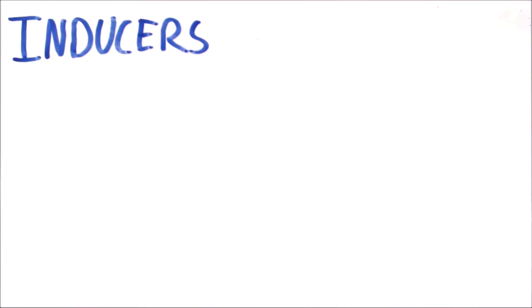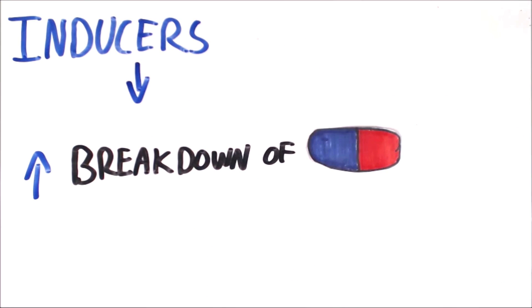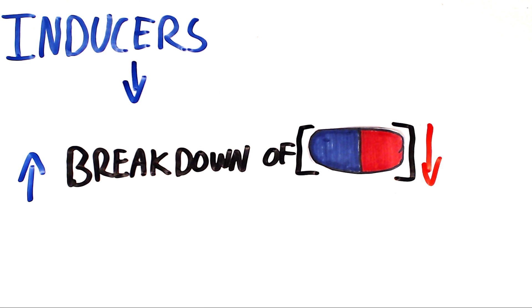Now a drug inducer increases the breakdown of the target drug, decreasing its concentration in the blood and therefore decreasing its effects. Thus you need a higher dose of the target drug to get the same effect when a drug inducer is involved.